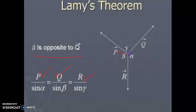So in summary: P is exactly opposite to alpha, Q is exactly opposite to beta, and R is exactly opposite to gamma. Using Lamy's theorem with this formula allows calculation of unknown forces when three coplanar concurrent forces are in equilibrium. Remember both the statement and the formula for solving problems.